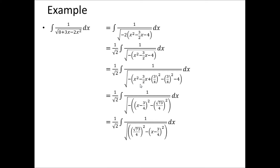Converting this into a standard form and multiplying inside the bracket with the minus sign, we get 1 upon root two times integral of 1 upon square root of a squared minus x squared. This is the standard form whose integral is sin inverse of x upon a plus a constant. Simplifying, we get the final answer: 1 upon square root of 2 times sin inverse of (4x minus 3) upon root 73 plus a constant of integration.